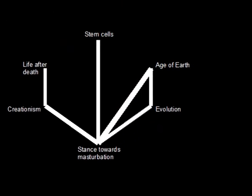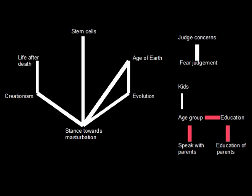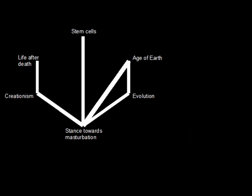There are other very strong connections, but I didn't think they were that interesting — they're kind of a side show. For instance, judge concerns versus fear of judgment: judge concerns is just a more detailed look at the fear of judgment. Then there's age group, which is connected to speaking with parents and education, and education is connected to education of parents. Age group is also connected to kids — it shows that young people say they want kids in the future while older people say they either have kids or they don't. So no big surprise there; I'm going to remove them from the graph for now, though some can appear later.